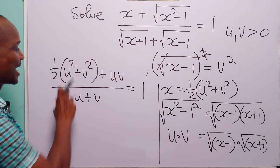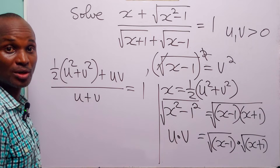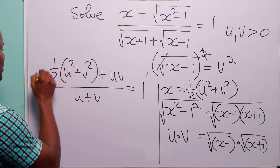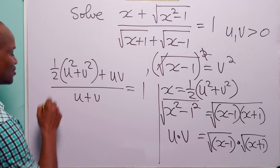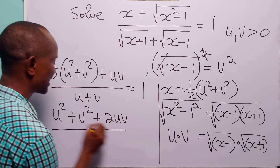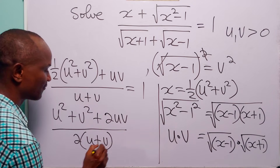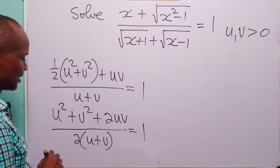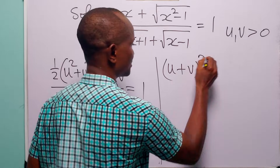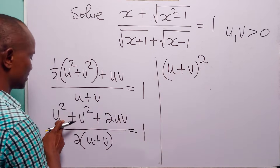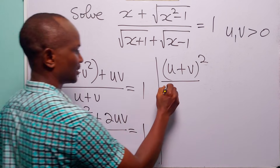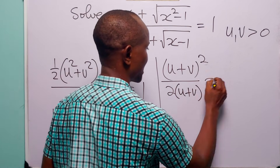To get rid of the half, let us multiply both the numerator and denominator of this fraction by 2. Since multiplying numerator and denominator by the same quantity doesn't change the fraction, we get: u squared plus v squared plus 2uv, divided by 2(u plus v), still equal to 1. The numerator is the same as (u plus v) squared, since expanding gives u squared plus 2uv plus v squared.